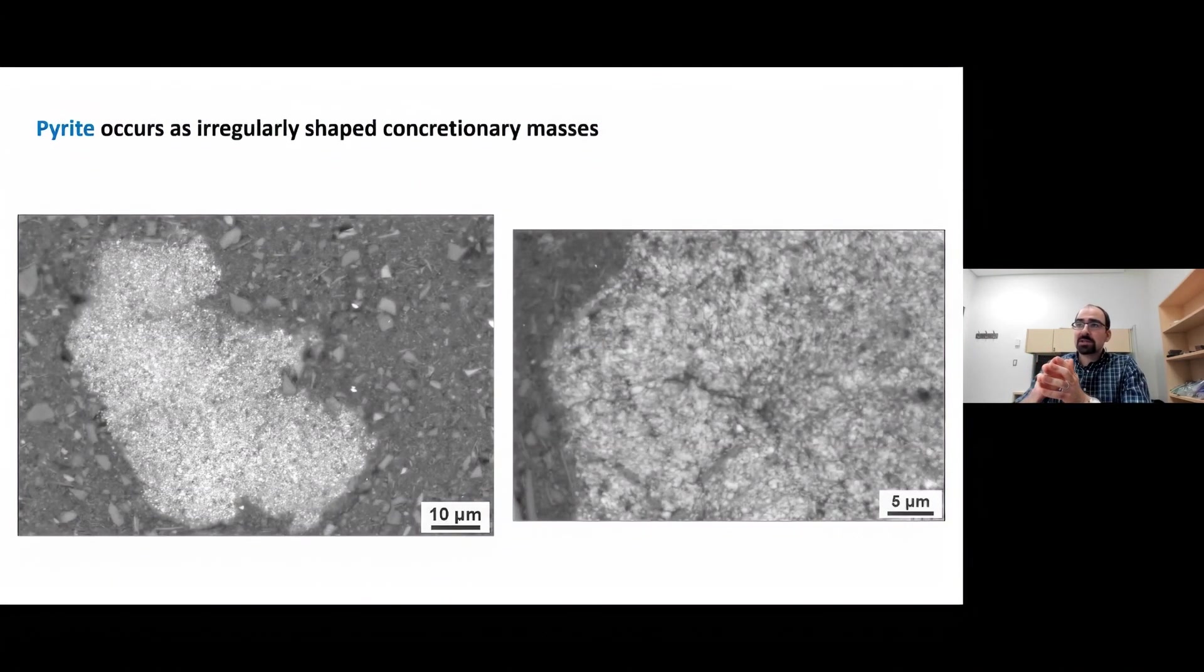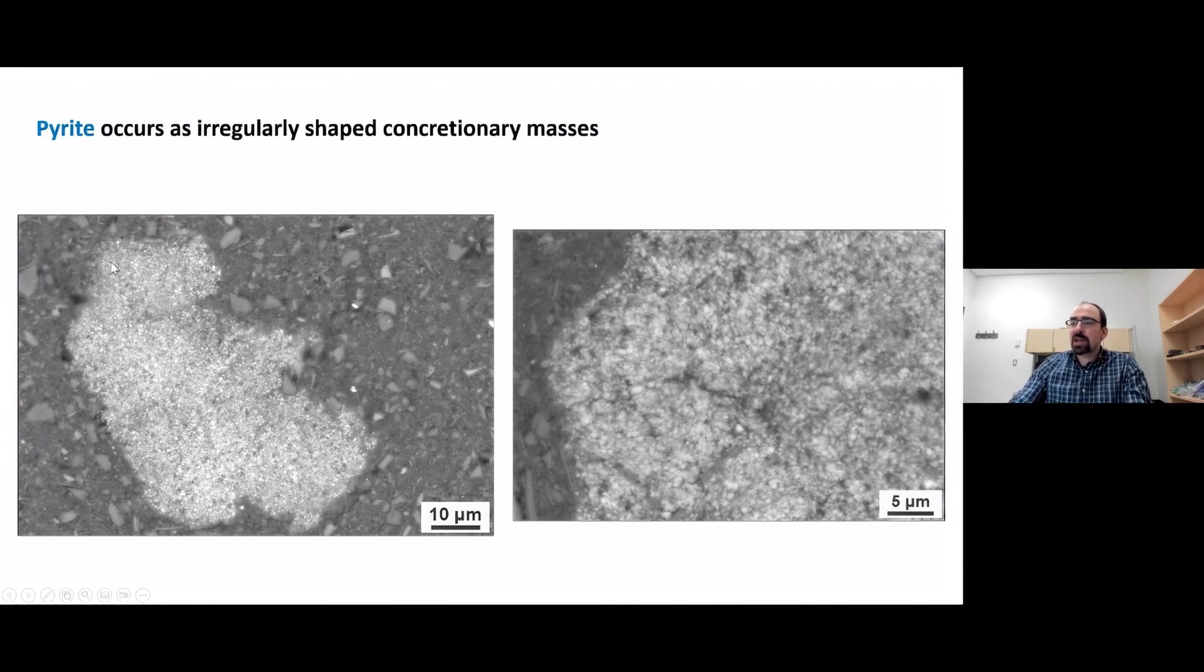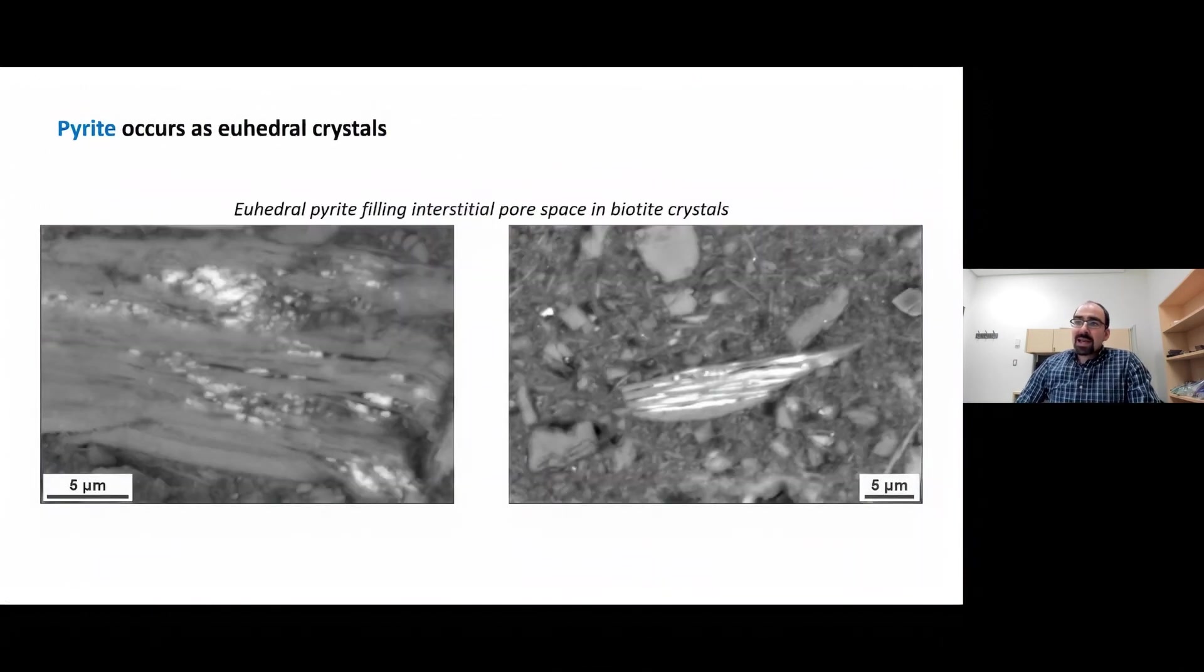The other form of pyrite recognized are these irregularly shaped concretionary masses, as you can see here. The pyrite is poorly developed, has a poor crystalline habit, kind of clustered together. These are typically on the order of about 60 to 100 micrometers. Lastly, pyrite also occurs as euhedral crystals that fill the interstitial pore space in biotite crystals. Both of these electron micrographs show pyrite in euhedral form that has precipitated within the interstitial pore space between these expanded mica flakes. The extensiveness of the pyrite cement can range from locally developed as shown in the example on the left to extensive as shown on the right, almost completely infilling the space between the cleavage planes.